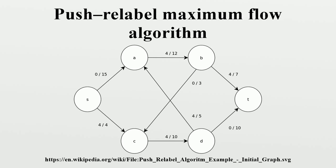The Push-Relabel algorithm is considered one of the most efficient maximum flow algorithms. The generic algorithm has a strongly polynomial O-time complexity, which is asymptotically more efficient than the O Edmonds-Karp algorithm. Specific variants of the algorithm achieve even lower time complexities. The variant based on the highest-label vertex selection rule has O-time complexity and is generally regarded as the benchmark for maximum flow algorithms. Subcubic O-time complexity can be achieved using dynamic trees, although in practice it is less efficient.